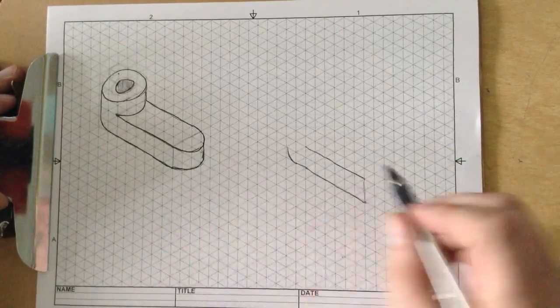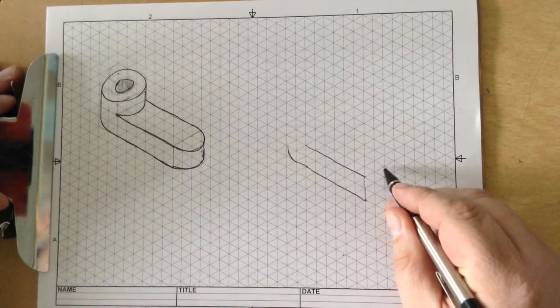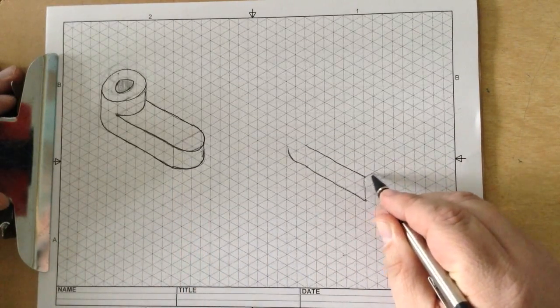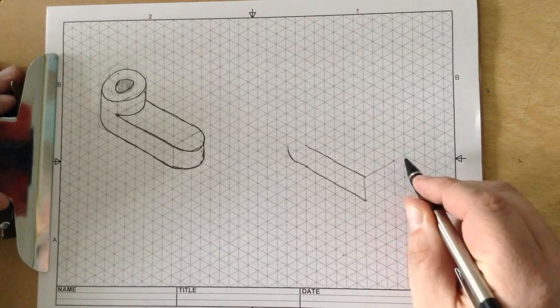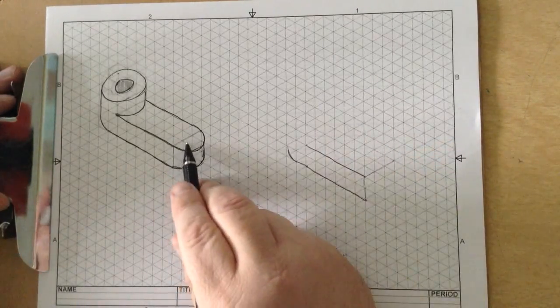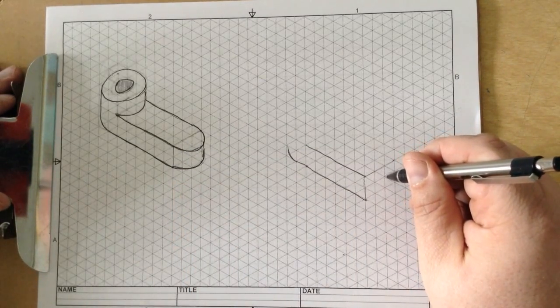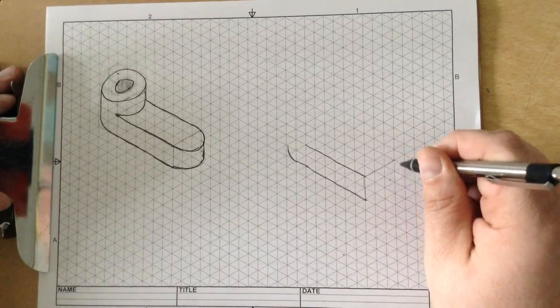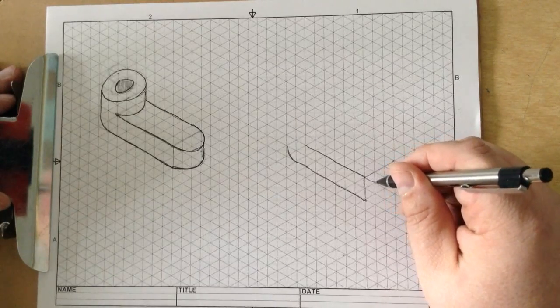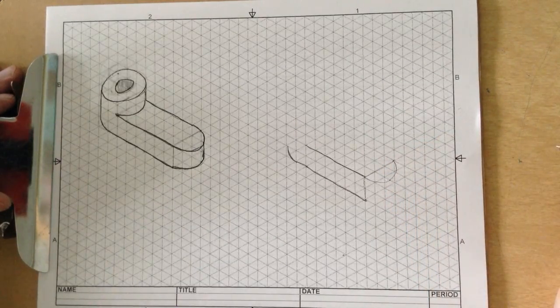Now from here, if I go across 3, 1, 2, 3, and again a very light construction line, I have that point right there. Now you can see this comes out 1½. So if I go 1½, there is the high point of my curve.